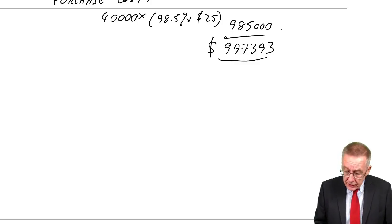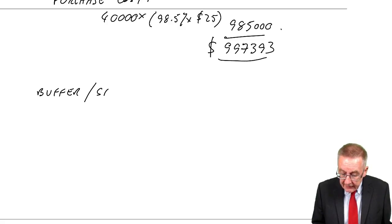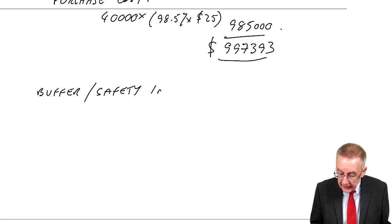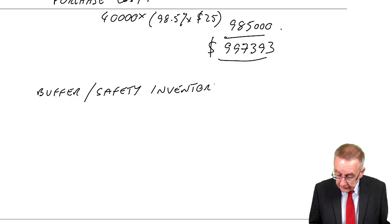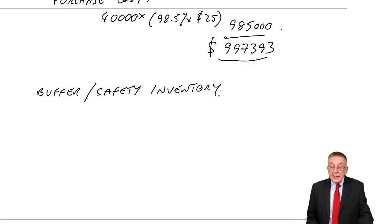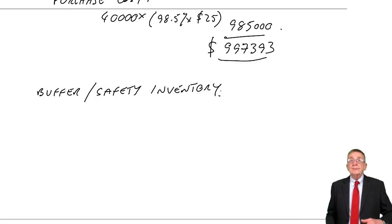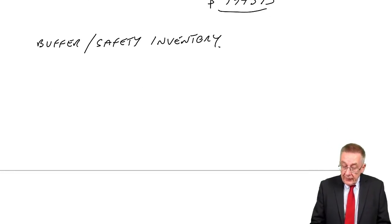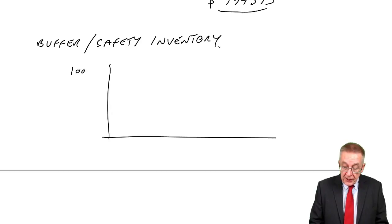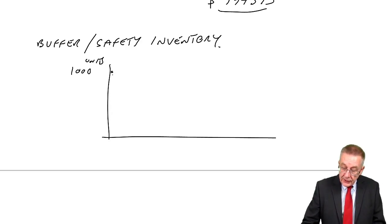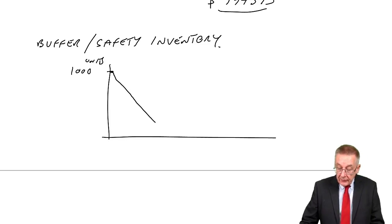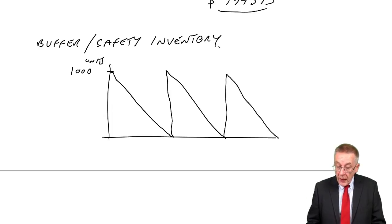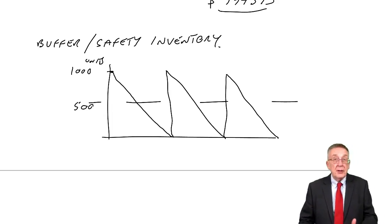Sometimes you might see mention of what's called buffer or safety inventory. And all this is, if you think back to the beginning of the first lecture, I said that if we ordered 1,000 units each time, inventory would start with 1,000. It'd fall to zero, then back to 1,000, down to zero, back to 1,000, and so on. And the average inventory would be half the order quantity.